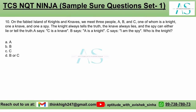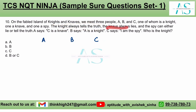On the fabled island of Knights and Knaves, we meet three people: A, B, and C. One of them is the knight, one is the knave, and the other is a spy — all three roles are different. The knight always tells the truth, the knave always lies, and the spy can either lie or tell the truth.